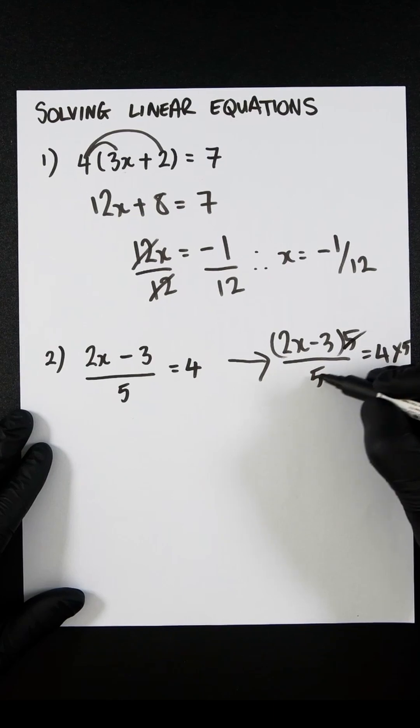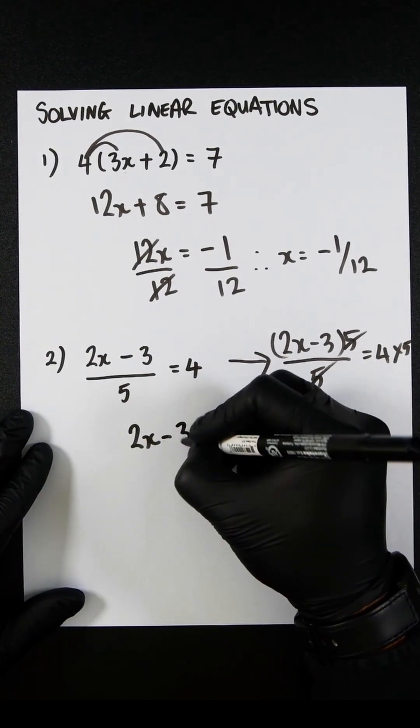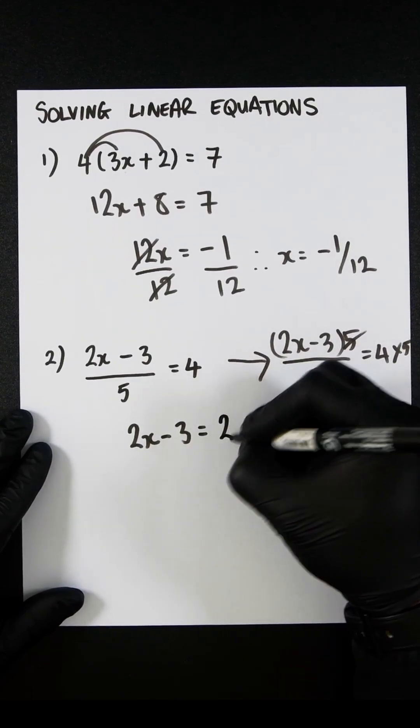The 5s will cancel out, and we will now get 2x minus 3, which equals 20.